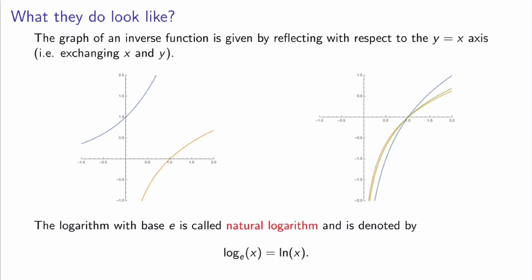What do logarithmic functions look like? The graph of an inverse function is obtained by reflecting with respect to the y = x axis. If you sketch e^x and reflect about y = x, you get the graph of ln(x) (the orange curve). I've also sketched logarithm in base 2 (blue) and logarithm in base 3 (orange). They all go through the point (1, 0), which makes sense because all exponential functions go through (0, 1), and reflection exchanges those. The domain of all logarithmic functions is all strictly positive reals, and the range is all real numbers.